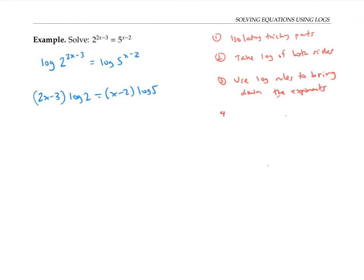Now I'm going to distribute things out to free the x's from the parentheses. That gives me 2x·log 2 - 3·log 2 = x·log 5 - 2·log 5.